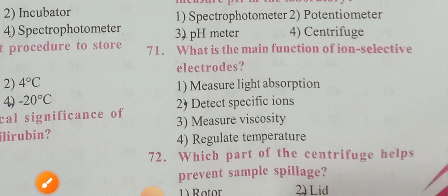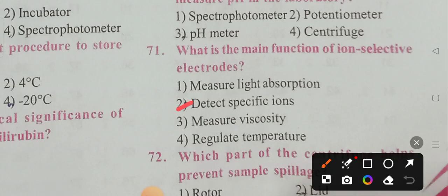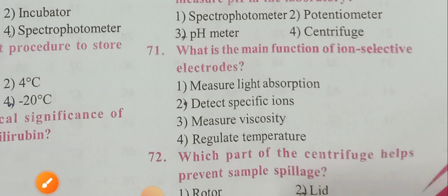Question 71: What is the main function of ion-selective electrodes? Options: measure light absorbance, detect specific ions, measure viscosity, regulate temperature. Option 2 is the correct answer — detect specific ions.